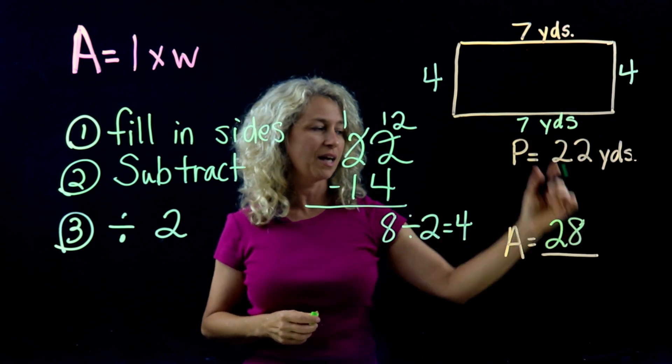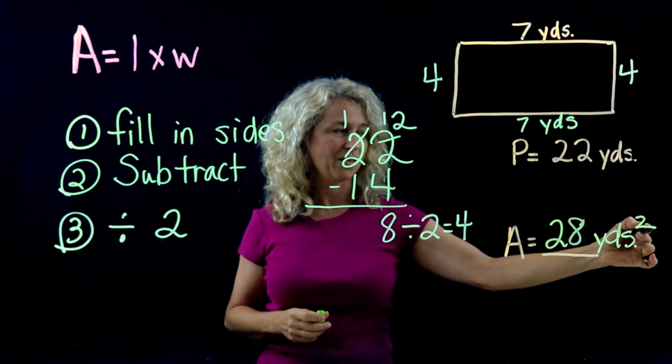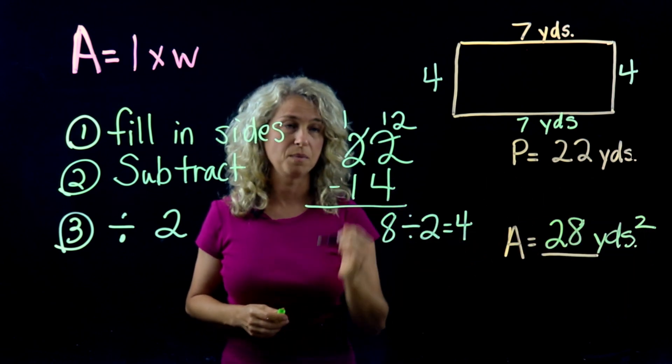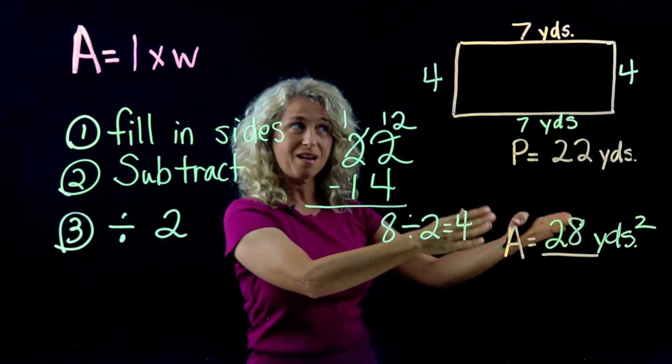So remember when you are given the perimeter but you're still trying to find the area, follow the three steps: fill in the sides what's given, subtract these two numbers from your total and divide by 2 in order to find that missing side.